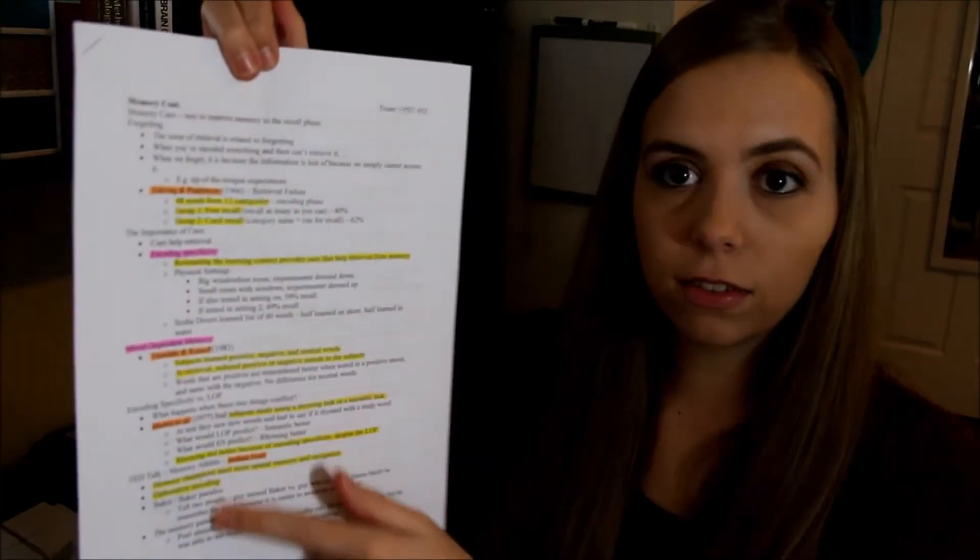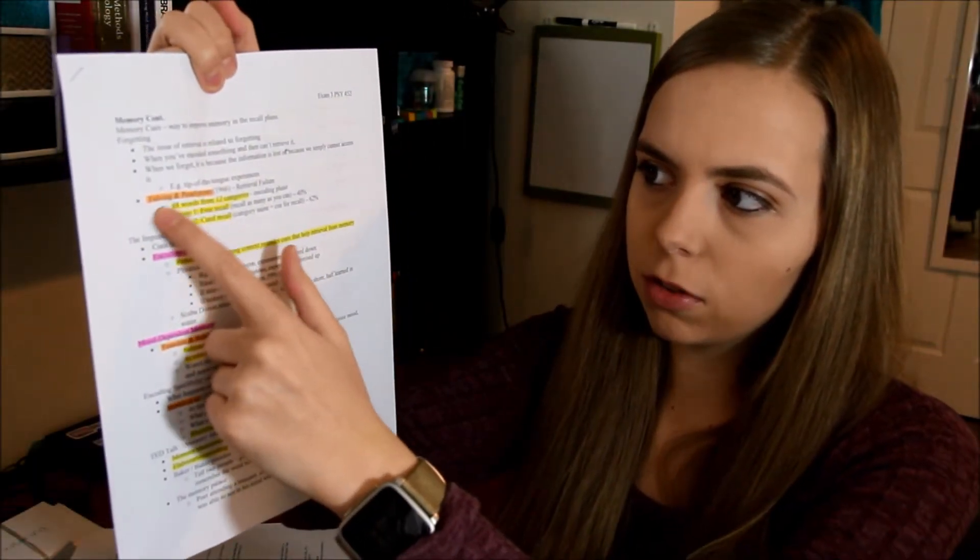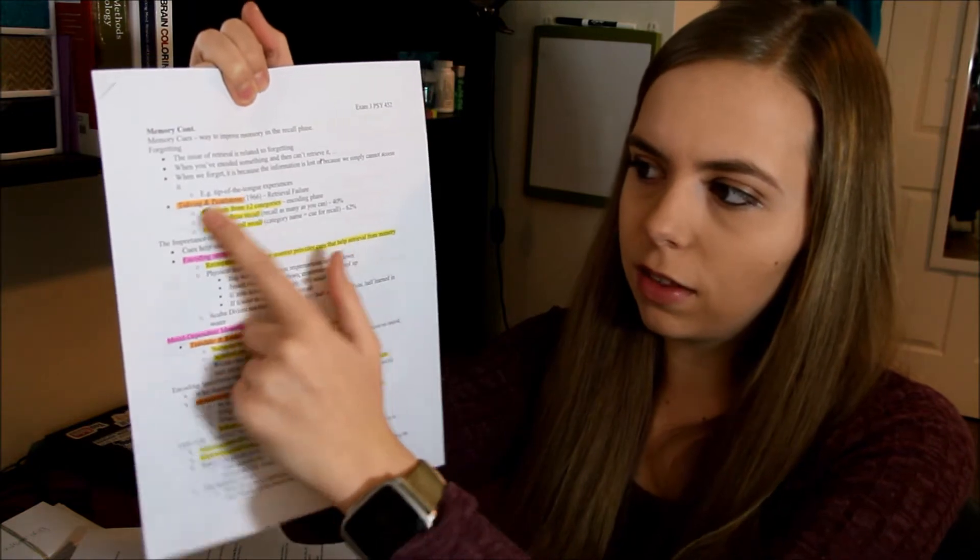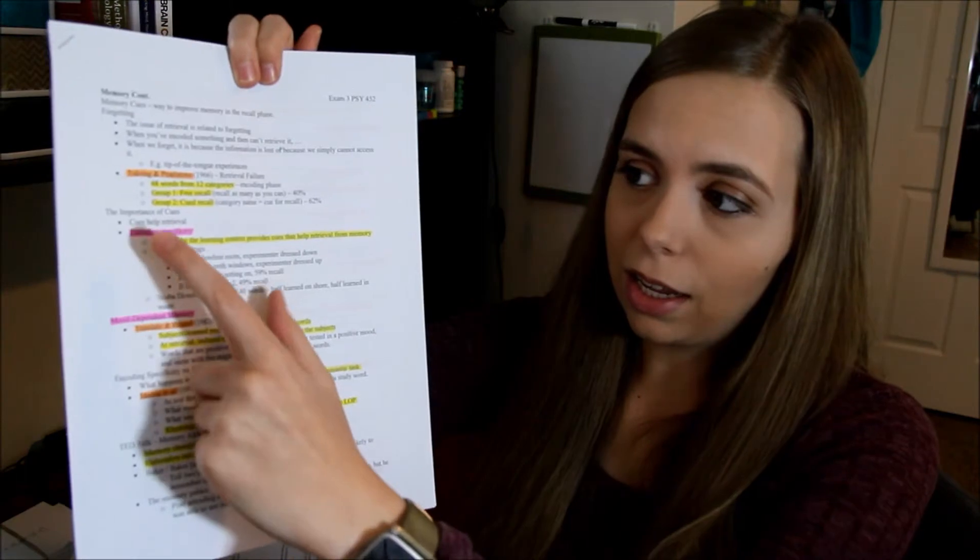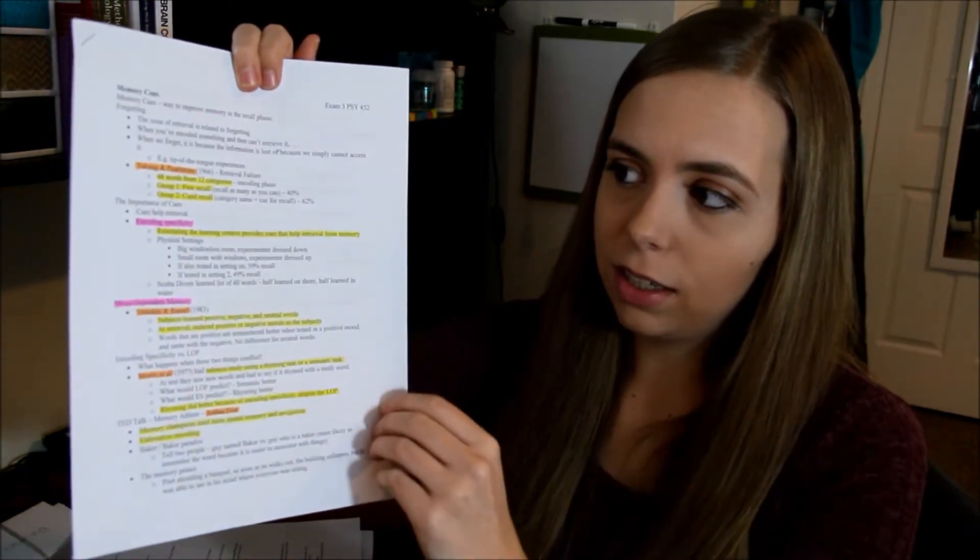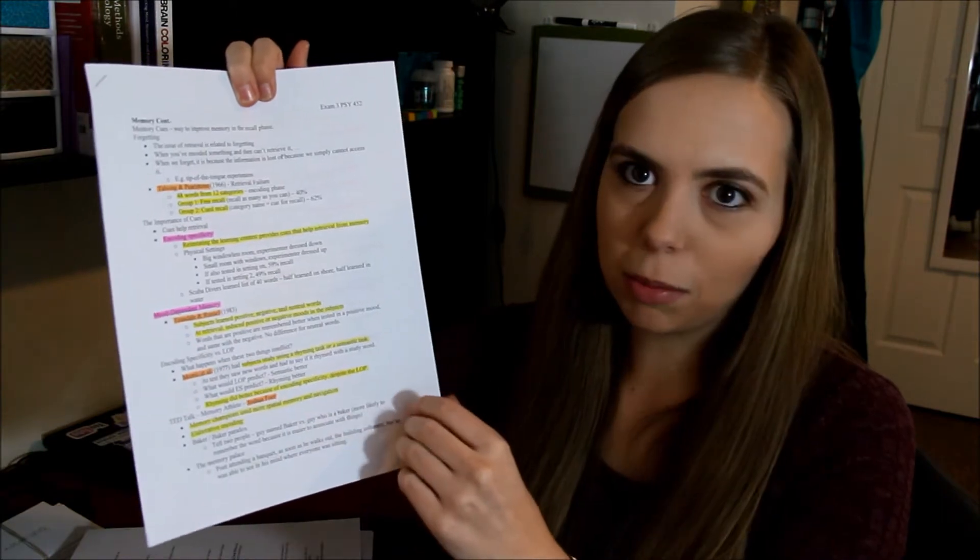I'll give you an example of what I'm saying right here. So these are my notes for an exam that I'm studying for for Friday. And as you can see, there's different colors of highlights. So people's names, like here Tolving and Pearlstone, is highlighted in orange. The study that they did, important things about it, are highlighted in yellow. So yellow highlighting is just for important things, but they're not necessarily like vocab words or people. Then I have key terms highlighted in pink, so I have like encoding specificity, mood dependent memory.